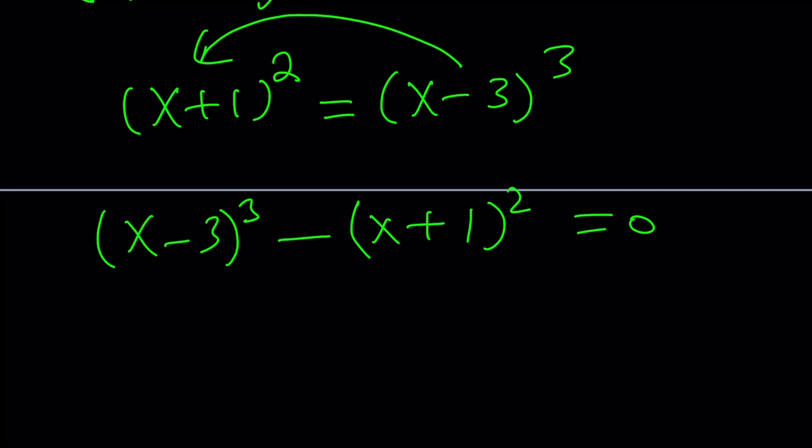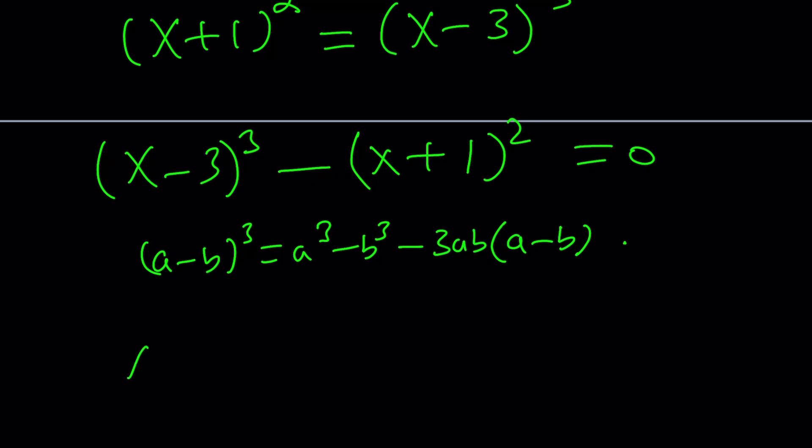How do you cube x minus 3? Usually the formula I use for cubing a minus b is a cubed minus b cubed minus 3ab multiplied by a minus b. So x minus 3 cubed is going to be x cubed minus 27 minus 9x multiplied by x minus 3. I'm going to distribute the 9x. And x plus 1 squared can be written as x squared plus 2x plus 1.